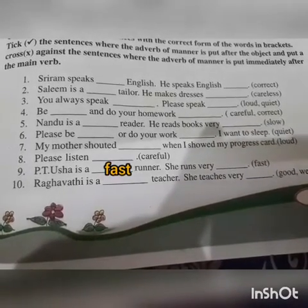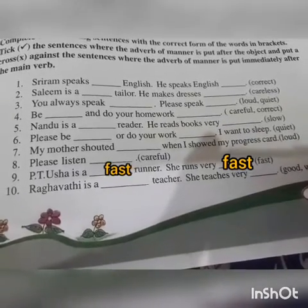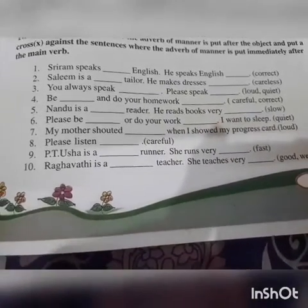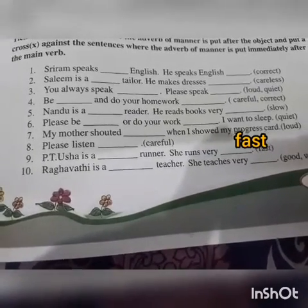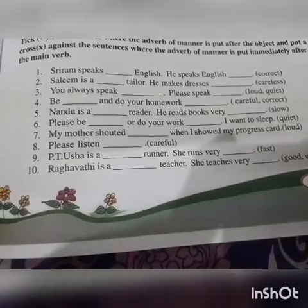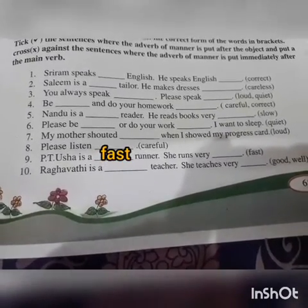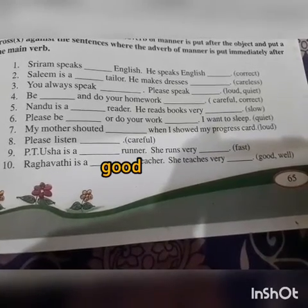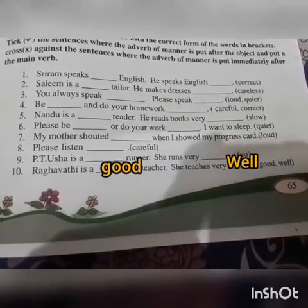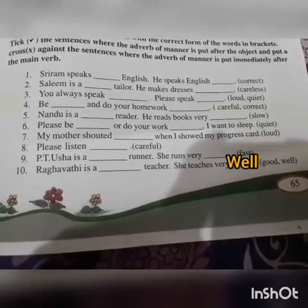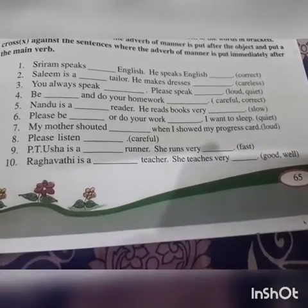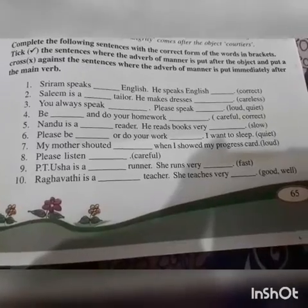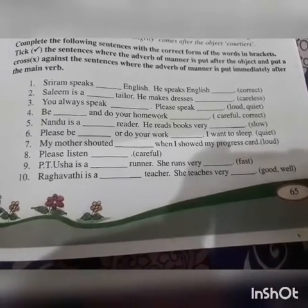'PT Usha is a fast runner — she runs very fast.' Notice that with the word 'fast,' we never add '-ly.' There is no such word as 'fastly' — that would be wrong. 'Fast' is used as both adjective and adverb. Similarly, 'Ragwati is a good teacher — she teaches very well.' We don't say 'welly.' So 'fast' and 'well' are two adverbs of manner where we do not add '-ly.'